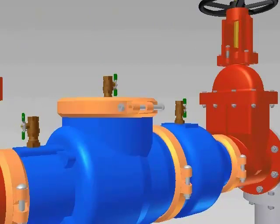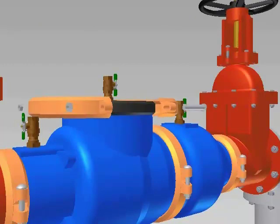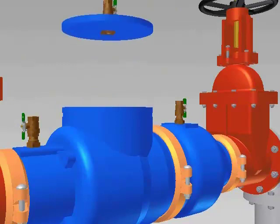Loosen and remove the two nuts and bolts on the groove coupling on the cover. Remove the coupling halves, gasket, and the cover. You can drain the water from the assembly by loosening the cover plate on the bottom of the valve.